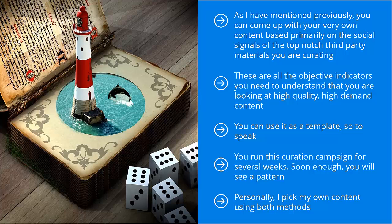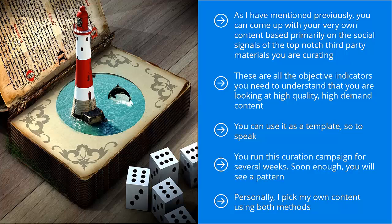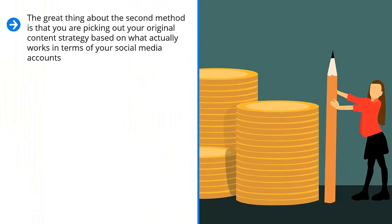Personally, I pick my own content using both methods. If I'm in a hurry to get people to sign up to my mailing list, I do the first method. But if I'm unsure about the niche or I'm still trying to feel my way around in terms of understanding my audience, I would stick to the second method. There's really no one right answer — it really all depends on your situation. The great thing about the second method is that you are picking out your original content strategy based on what actually works in terms of your social media accounts.